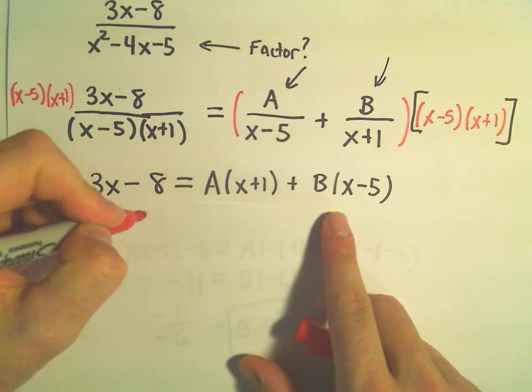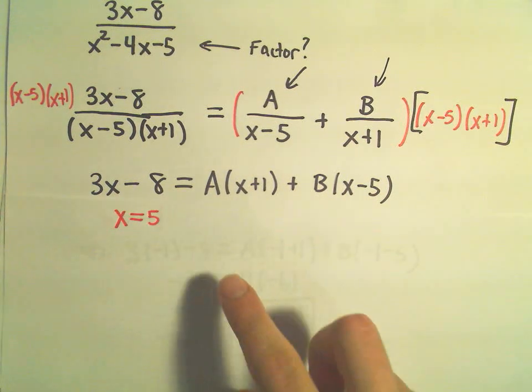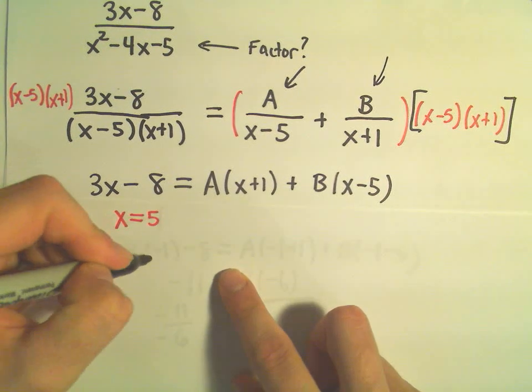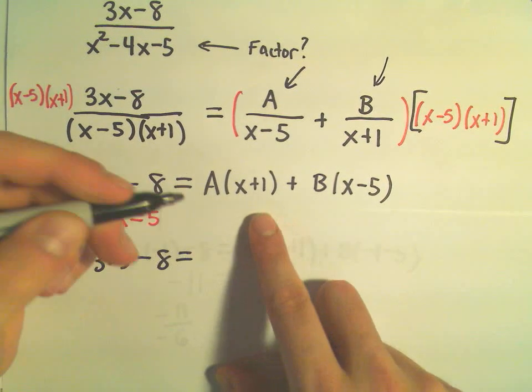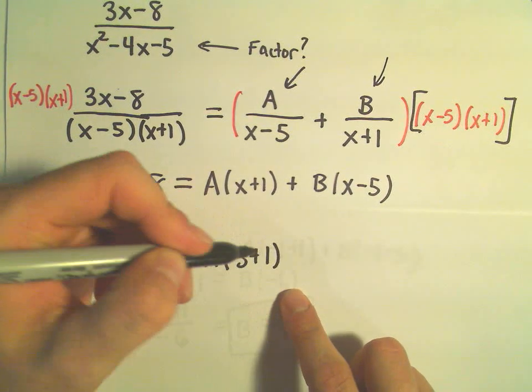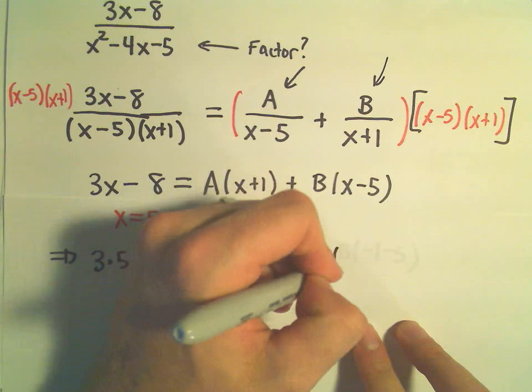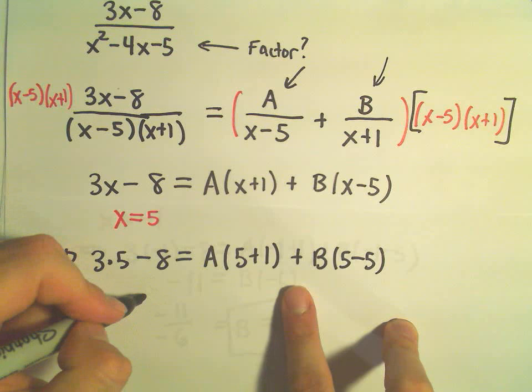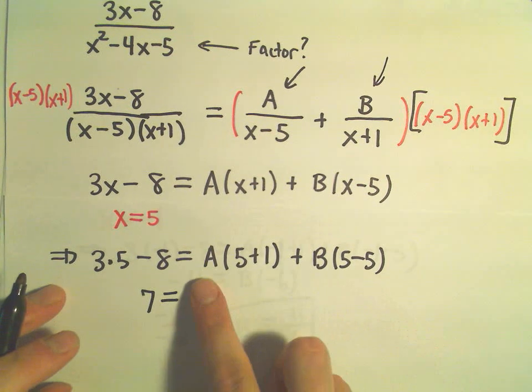And if we do that, well, we'll get 3 times 5 minus 8 on the left side. We'll get A times 5 plus 1 plus B times, well, 5 minus 5. So on the left, we'll get 15 minus 8, which is 7. On the right, we have A times 6. We can write that as 6A.